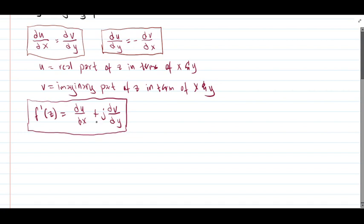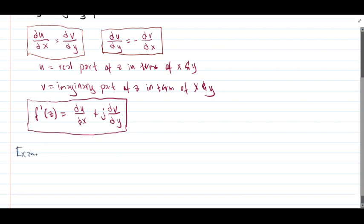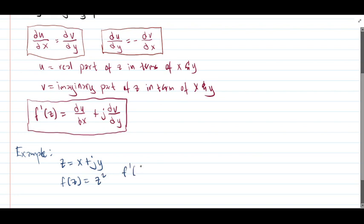If not, then we could not get the derivative of that complex number. So to appreciate this, we need to have an example for direct application of our formulas. Example: our z is equal to x plus j of y, and our f of z will be equal to z squared. We need to get the first derivative of our z — that is the requirement of the problem.